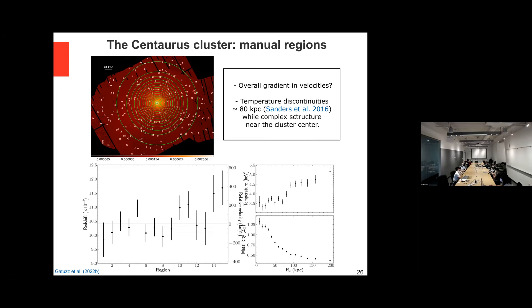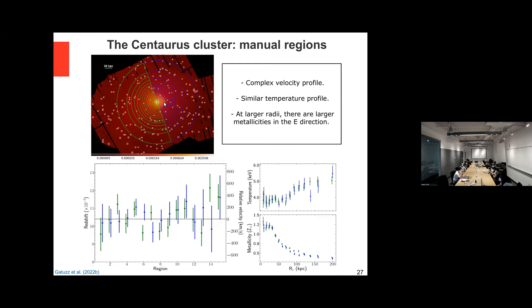We divided the concentric rings in two directions to look for patterns, but the velocities are really complex so there is not much to say there. The temperature profiles are quite similar between both directions, while the metallicities tend to be larger in the eastern direction as we move away from the cluster core. This could be due to the presence of sub-components in the cluster.